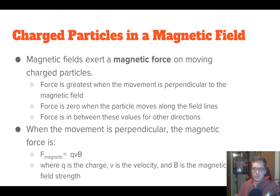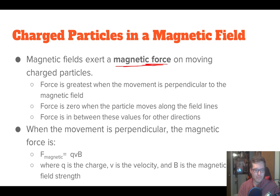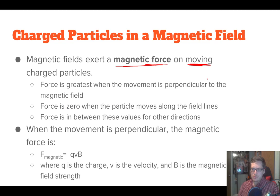Now we're going to look at what a magnetic field can do to a moving charged particle. What it amounts to is that the magnetic field can exert what's called a magnetic force — essentially that force you feel when magnets pull on one another. This magnetic force can act on moving charged particles; specifically, they have to be moving. The force is greatest when the movement is perpendicular to the magnetic field, and the force is zero when the particles move along the field line.